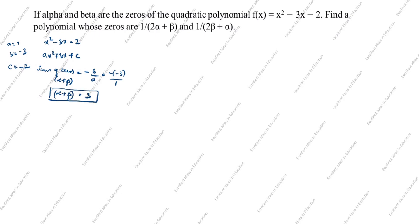Next, we will find the product of zeros. Alpha times beta equals c divided by a. c is equal to minus 2, a is 1. So alpha beta is equal to minus 2.